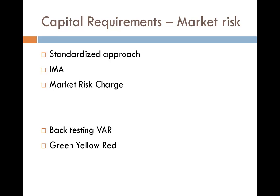The red zone is reached when exceptions exceed 10, at which point the multiplying factor is increased by 1. The plus factor is added to the base multiplier, which has a floor of 3, so exceeding 10 exceptions raises the multiplier to 4. If a bank's VaR model produces a high number of exceptions, the bank must adjust or discontinue use of that model. That concludes the discussion of market risk VaR under Basel, with special focus on the internal models approach.